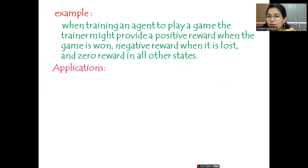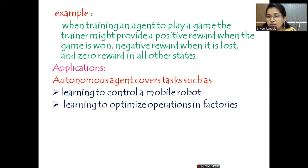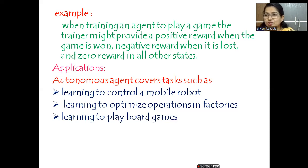Reinforcement learning can be used in all areas where an autonomous agent can learn tasks, such as controlling a mobile robot, learning to optimize operations in factories, and learning to play board games. Nowadays robotics are used in autonomous cars and surgeries. The agent program has to be very efficient, and it achieves that efficiency over many iterations — repeatedly performing the same task and updating the control policy, which maps states to actions, until it reaches perfection.